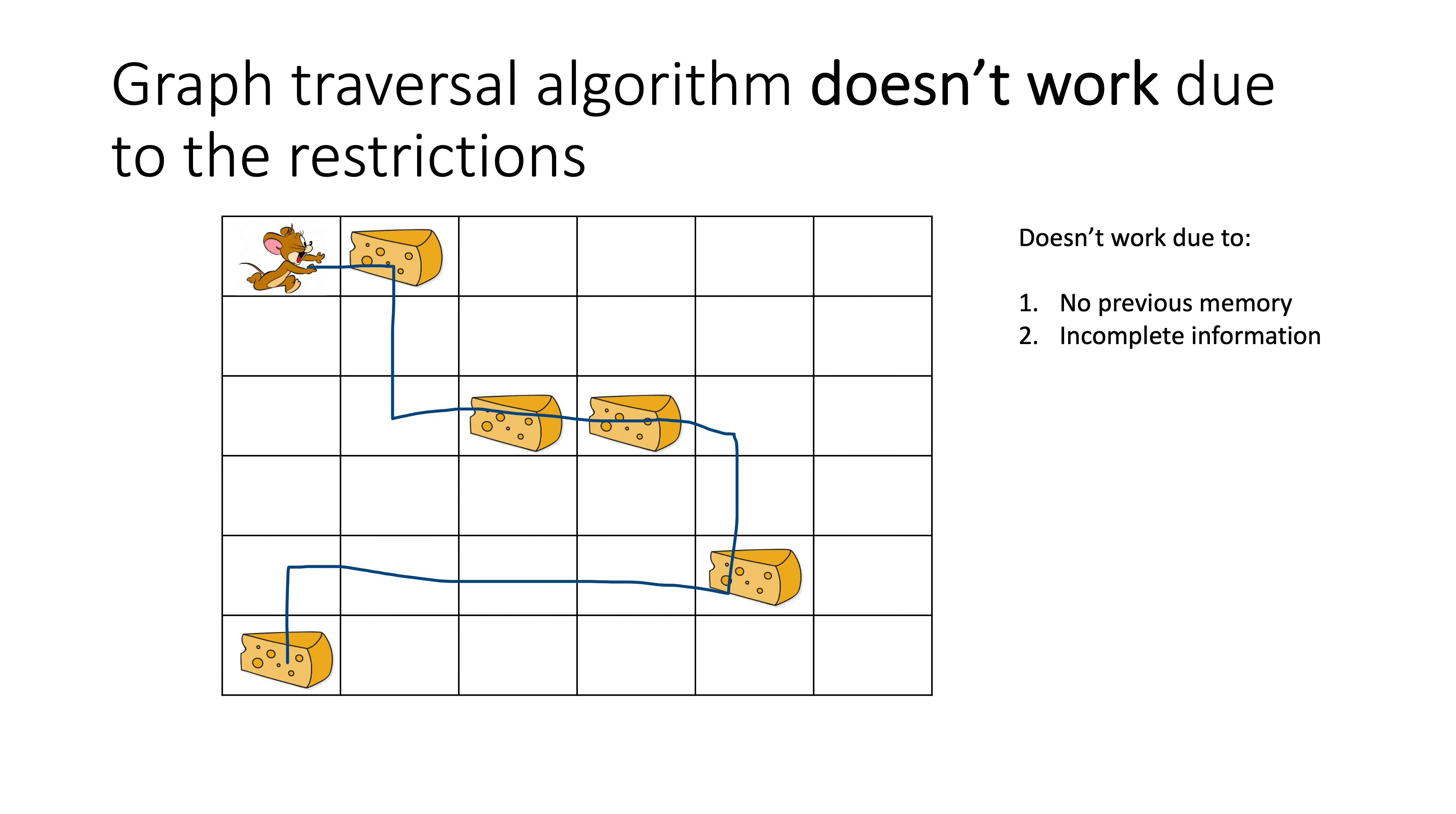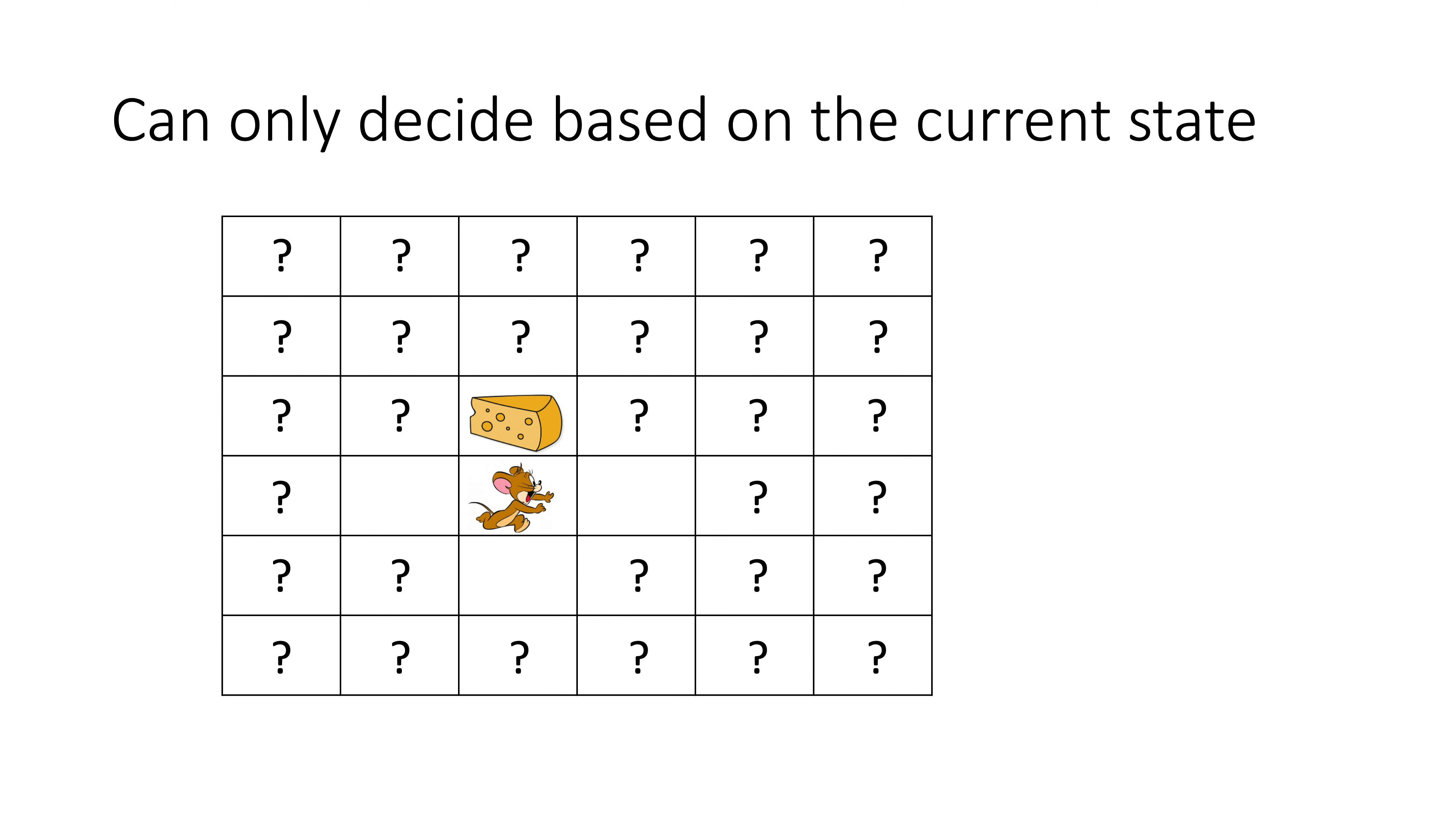If there weren't those restrictions, Jerry can just use some graph theory to find a shortest path that contains as many pieces of cheese as possible. But with restrictions, clearly, Jerry can only decide given the current states of five cells in a greedy manner. No more information is available.